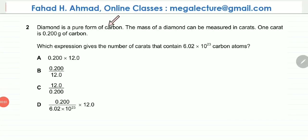The following question reads that diamond is a pure form of carbon. The mass of a diamond can be measured in carats. One carat is 0.2 grams of carbon. Which expression gives the number of carats that contains 6.02 × 10²³ carbon atoms?